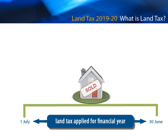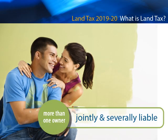If the property is sold after 30 June, generally an adjustment will be made by your conveyancer and you may be required to pay a proportion of land tax at settlement. Where there is more than one owner, each owner is jointly and severally liable. This means that each owner is liable for the full land tax liability regardless of their share in the land.